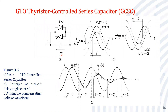When the turn-off delay angle is equal to zero, the voltage across the capacitor is the rated voltage, meaning the GTO switch is off and the full rated capacitor voltage appears. When the GTO is turned on and conducting, the current is bypassed through the switch, and therefore the voltage across the capacitor becomes equal to zero.